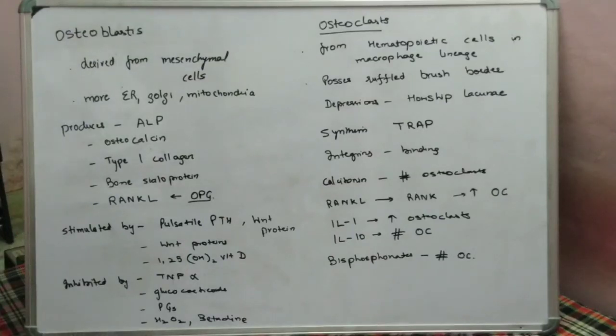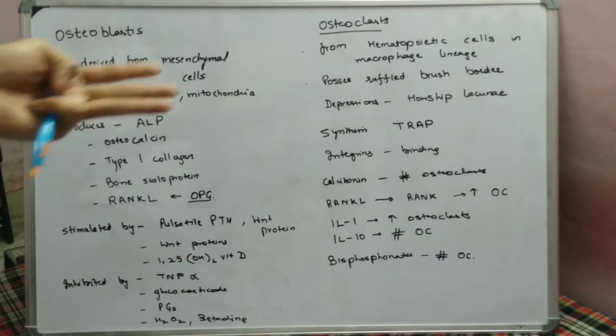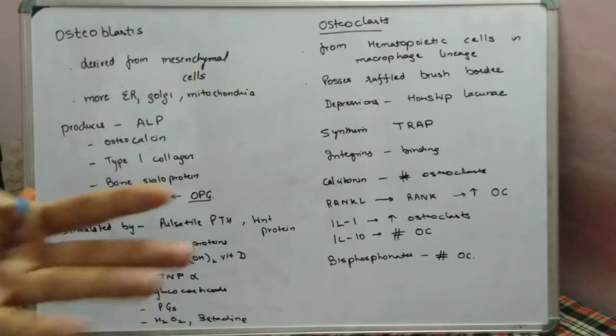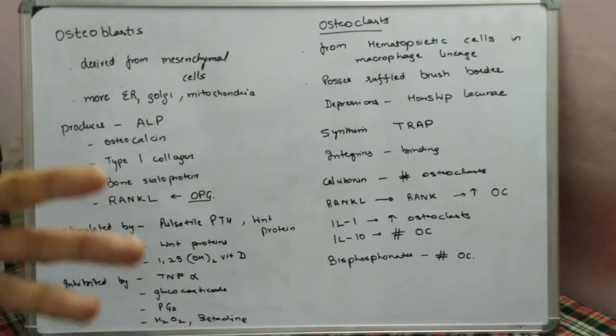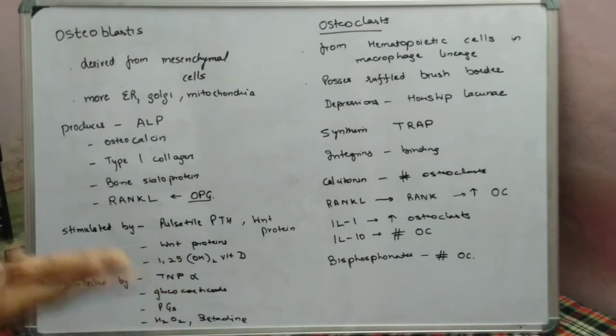In this video we will study about the basic bone cells. We have the osteoblast, we have the osteoclast, and we have the majority of the osteocytes, which form 90 percent of the bone cells.